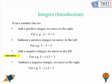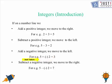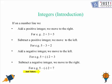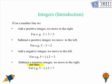If we add a negative integer we move to the left. So 5 + (-2) = 3, where 3 is to the left of 5 and -2 is a negative integer. Likewise, if we subtract a negative integer we move to the right. So 5 take away (-2) = 7, where 7 is to the right of 5 and -2 is a negative integer.